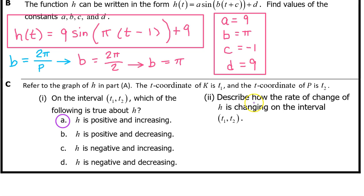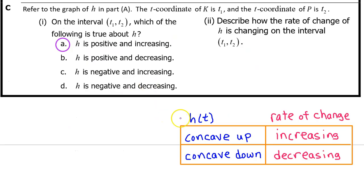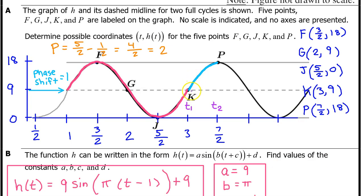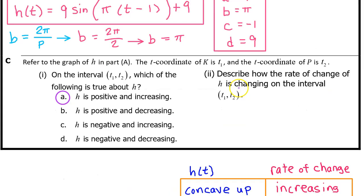See part 2. Describe how the rate of change of h is changing on the interval from t1 to t2. We have learned that if h of t is concave up, the rate of change is increasing, and if h of t is concave down, the rate of change is decreasing. On the interval from t1 to t2, h of t is concave down. Therefore, the rate of change is decreasing. It's probably safest to answer with a single word. Just say decreasing.